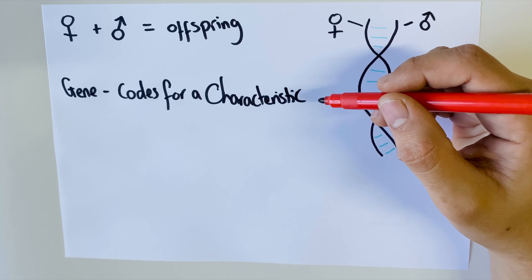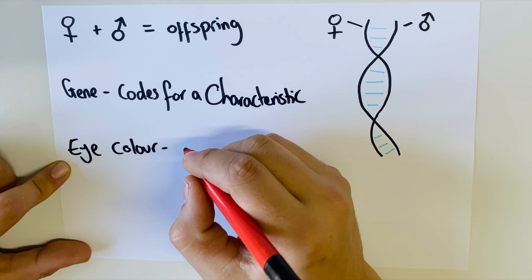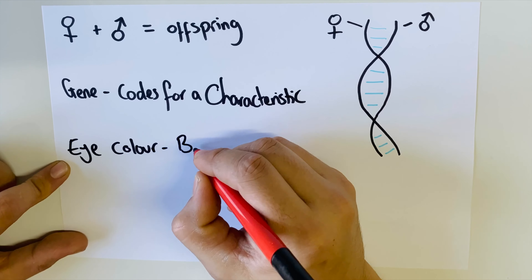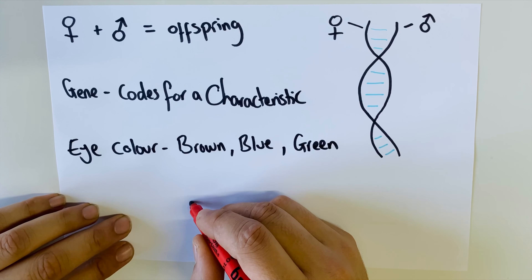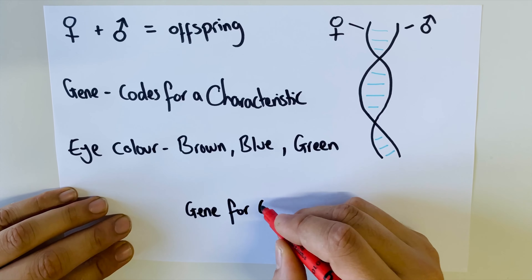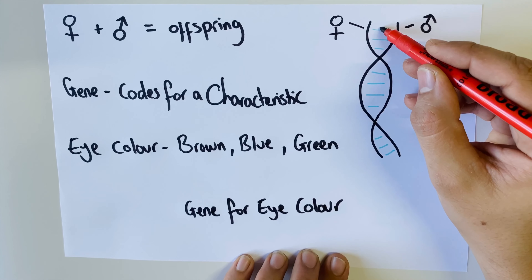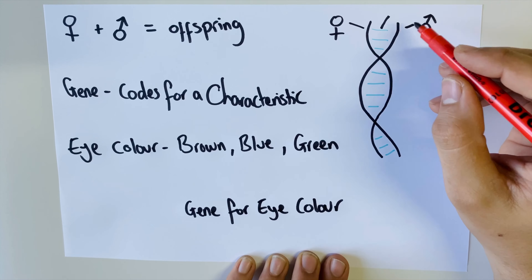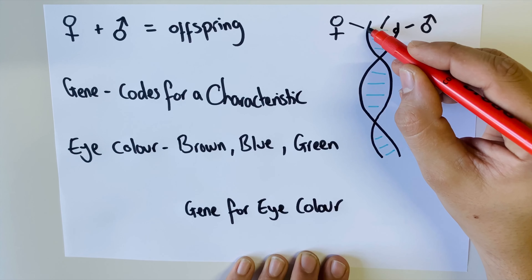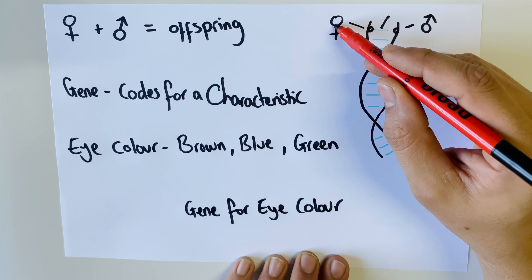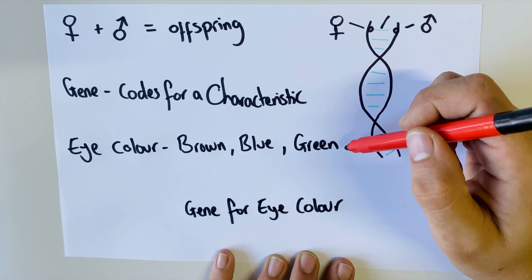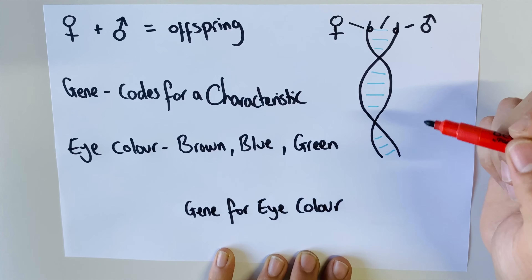DNA is generally represented as the double helix — and excuse my drawing, it's gone a bit lopsided at the bottom. Any organism has different sets of DNA, and what's important to know is that in any offspring produced from sexual reproduction, half of the DNA comes from the male and half from the female. So half the DNA is inherited from the father and half is passed down from the mother.